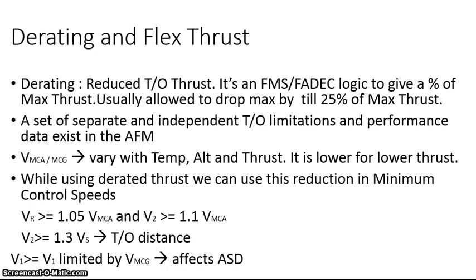De-rating and flex thrust. De-rating is reducing the takeoff thrust. It is an FMS or FADEC logic — compared to flat-rating, which is a mechanical change, de-rating is a software change — to give a percentage of the maximum thrust available. It is usually allowed to drop by a maximum of 25% of maximum thrust. On a de-rated engine, there is a separate set of takeoff limitations and performance data which exists in the AFM while using de-rating, and to use this you need to request it from the manufacturer.